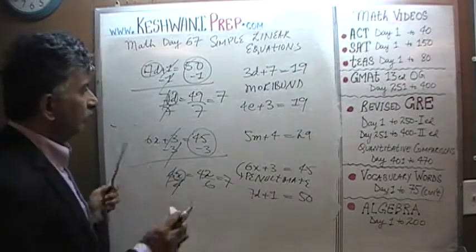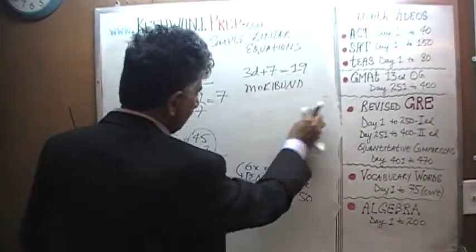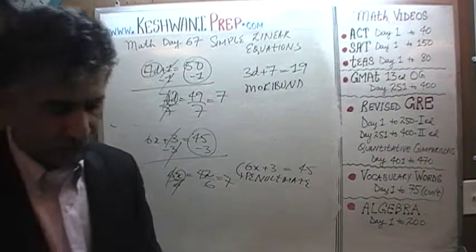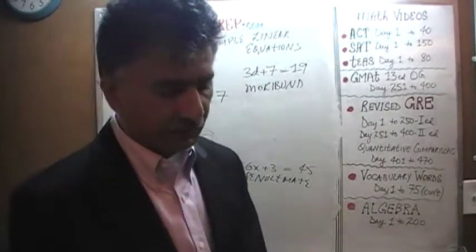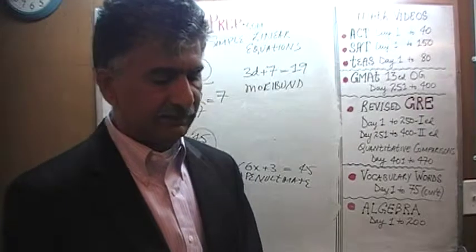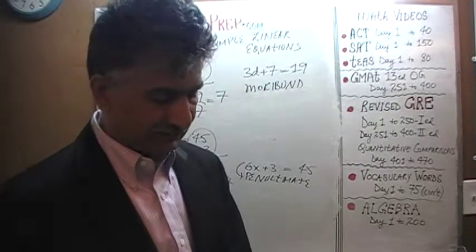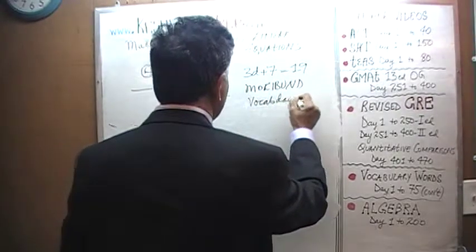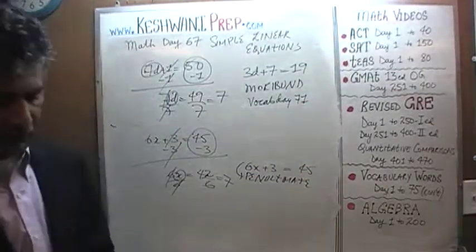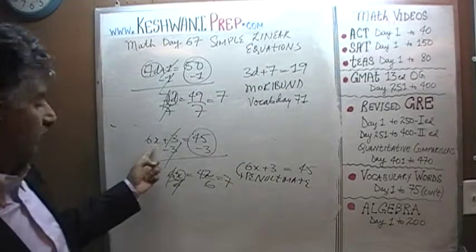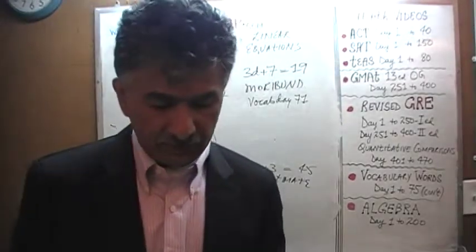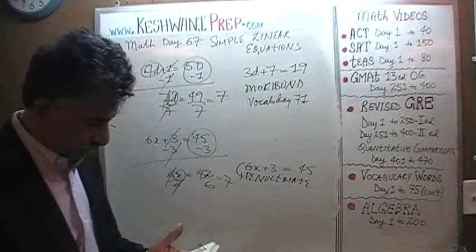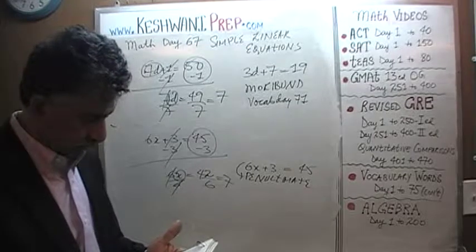The only thing we have left to take care of are these two vocabulary words. What does it mean to be moribund? I said that marker was moribund. Moribund means something that's almost dead — something that is dying, something that is close to death. We learned it on our vocabulary lesson. And what does penultimate mean? That question, 6x plus 3, was a penultimate question — it was the second to the last question.